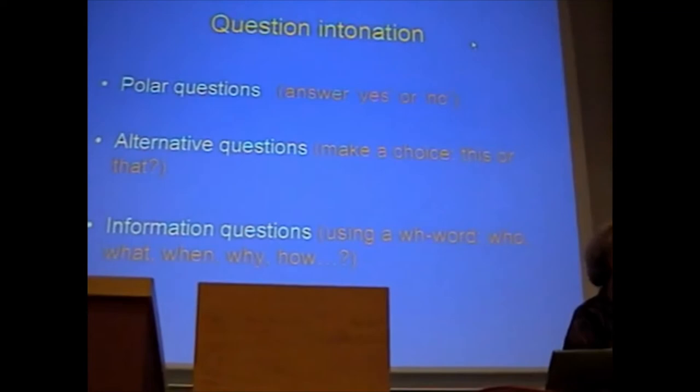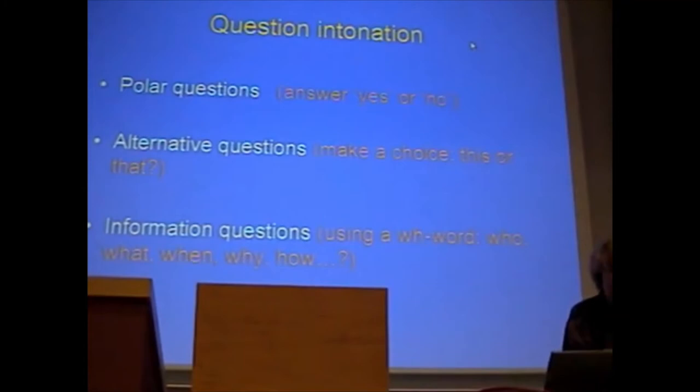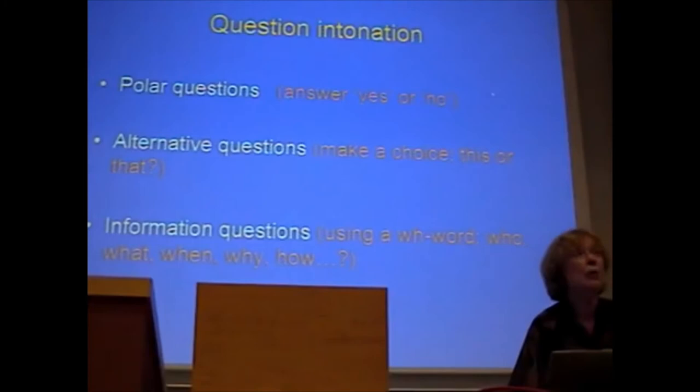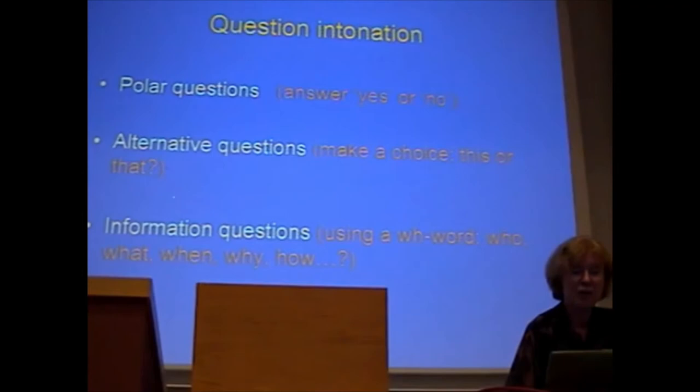There are a whole range of options available for both sorts of questions — all we can talk about is the default norms or most likely situation, but others are always possible. So: polar questions first — questions where we expect the answer yes or no; then alternative questions where we have to make a choice between things; and information questions, which are the ones with our so-called WH words — who, what, when, why, and how.